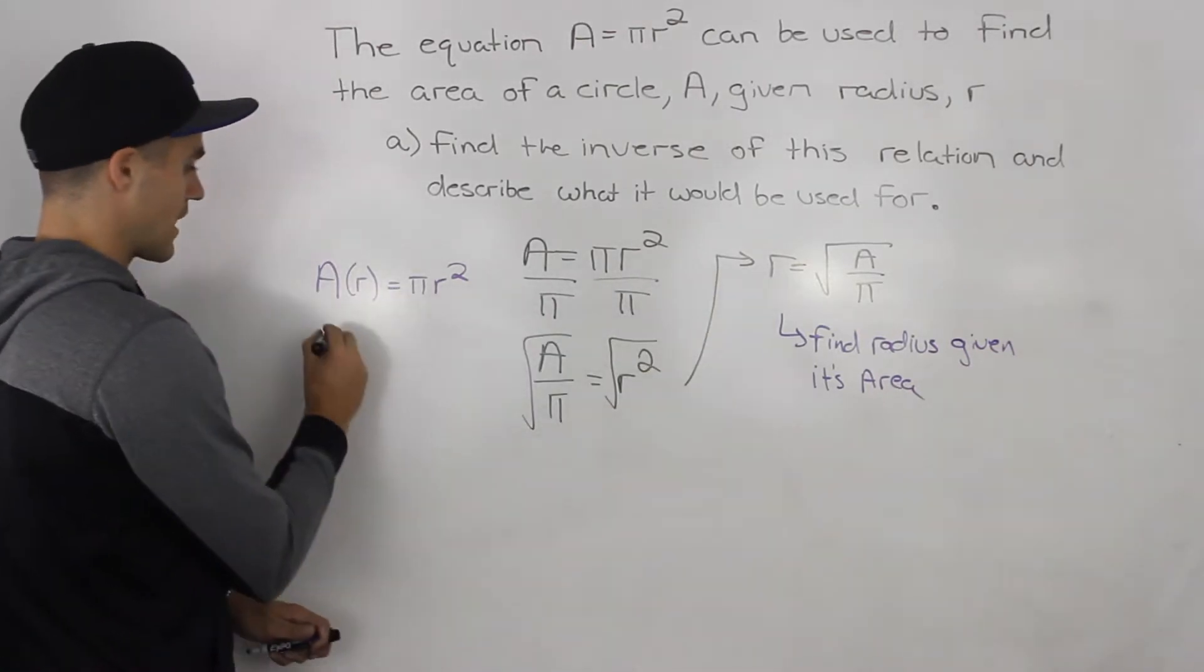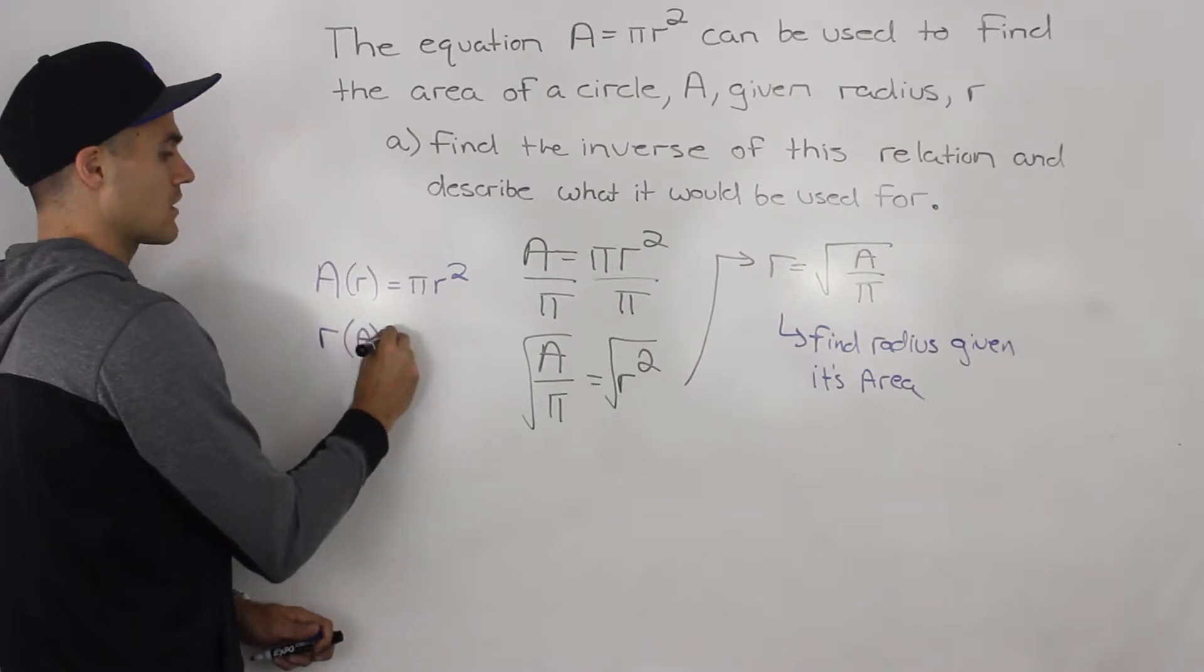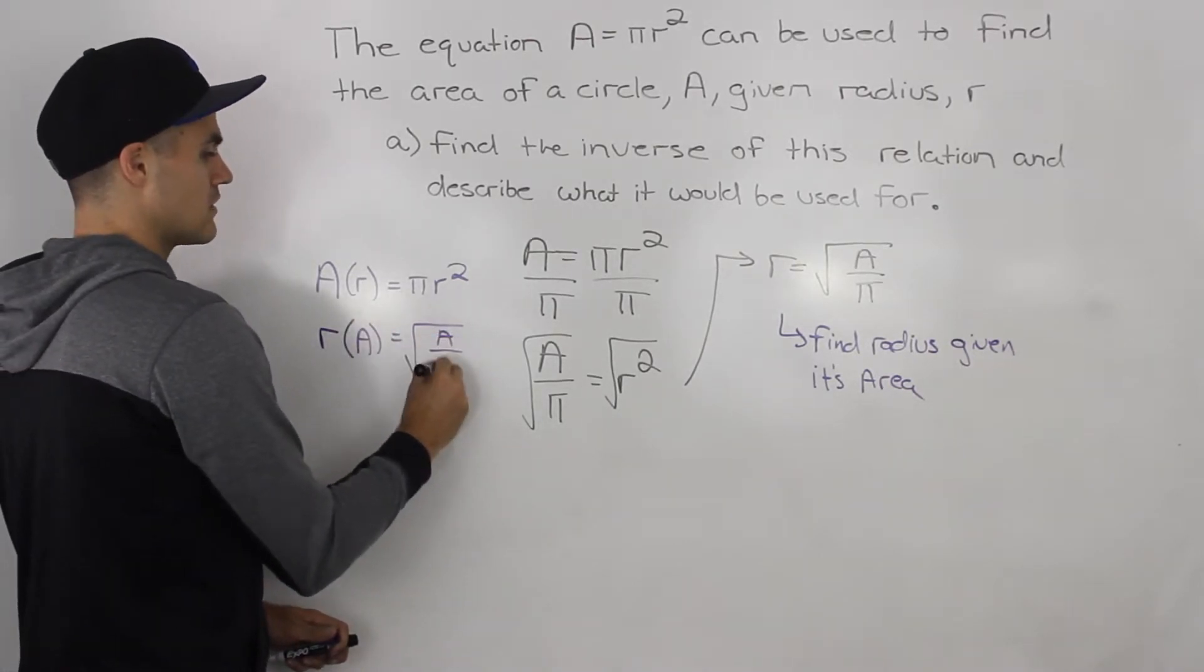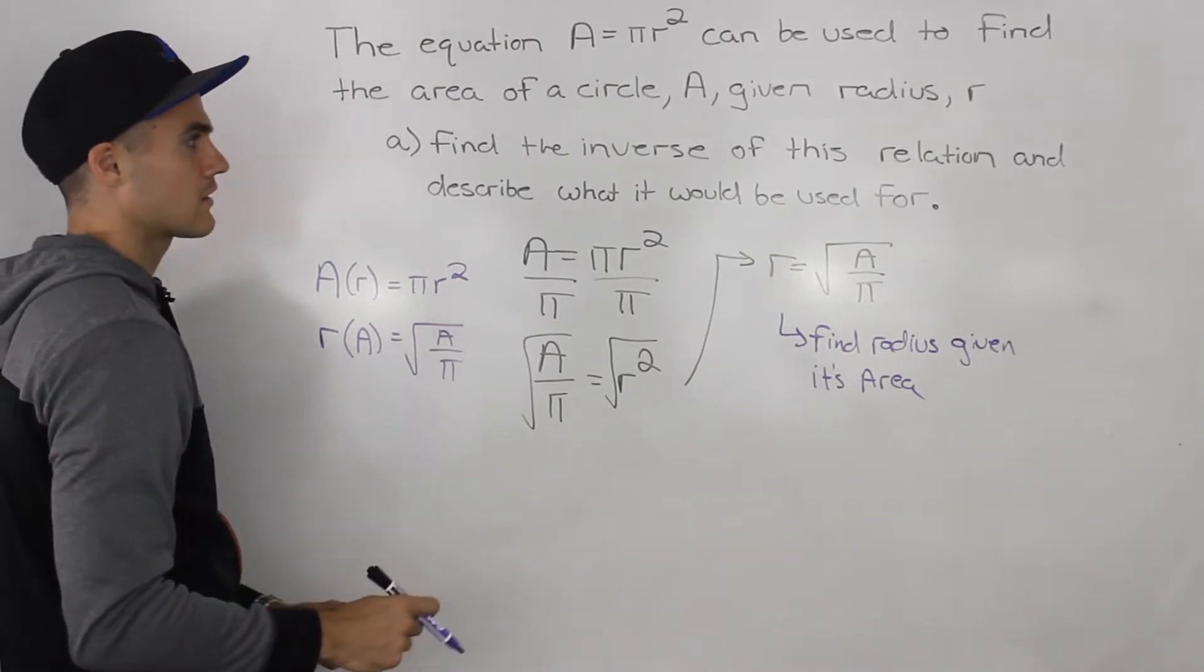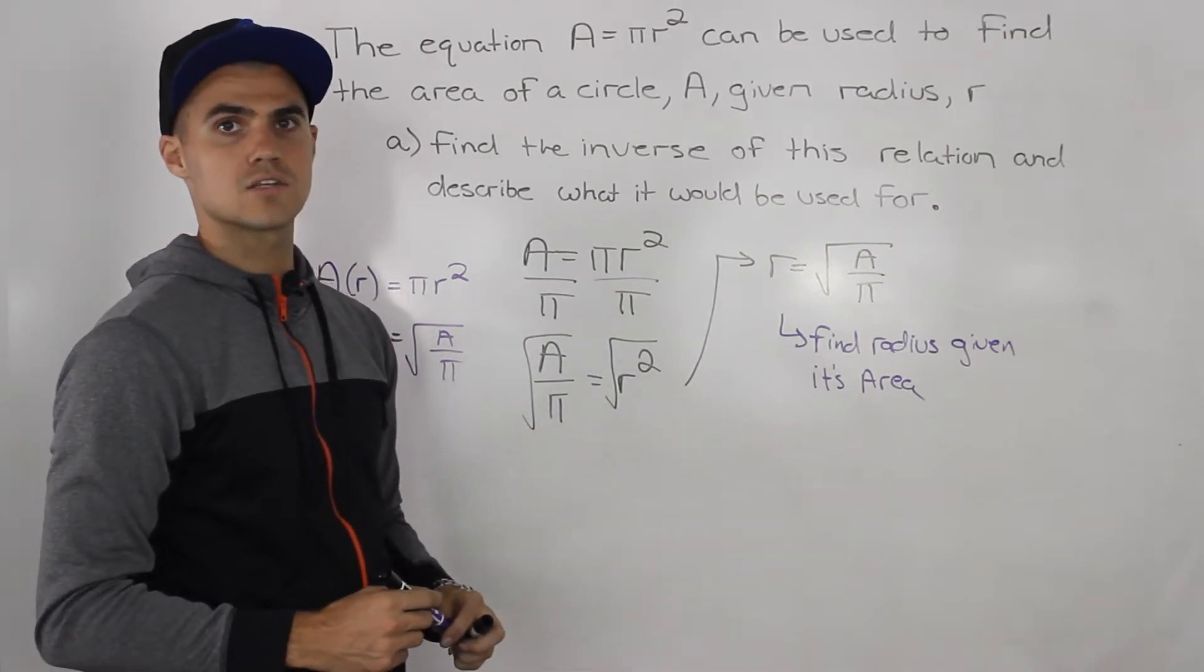Well, now with the inverse, we have a function, the radius in terms of the area, meaning that we can find the radius of a circle given the area. So that's what the inverse is, and that's what it is used for.